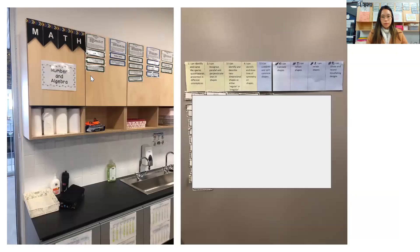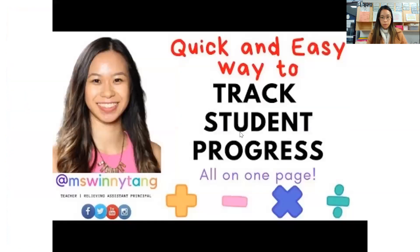I've also tried another method — putting up the goals and then having student names underneath, so that when they've shown me they can complete that goal and understand it, they get to move their names across to their next goal. So that's also another way that you can do it.